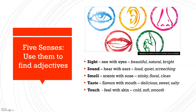Number three is smell — scents that you smell with your nose, like stinky, floral, clean. Number four is taste — flavors with your mouth — delicious, sweet, and salty are very common. And the last one, number five, is touch — things you can feel with your skin, such as cold, soft, smooth. There are many different adjectives; these are only a few examples.